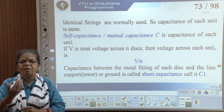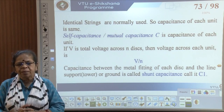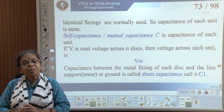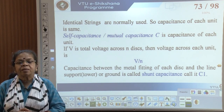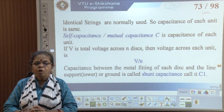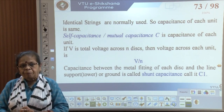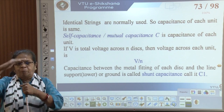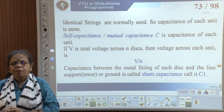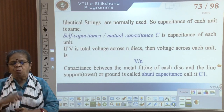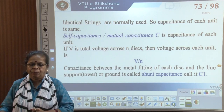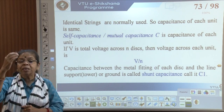You would expect the capacitance of each unit to be the same; this is called the self-capacitance or mutual capacitance, denoted by C. If V is the total voltage across all the discs and there are n discs, you would expect the voltage across each disc to be V/n — equal distribution because the discs are identical.